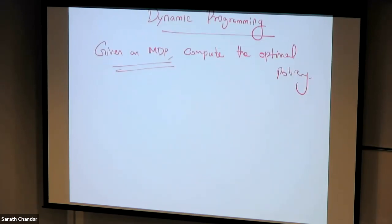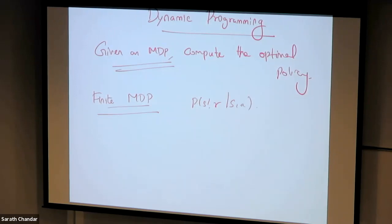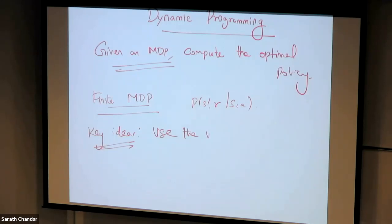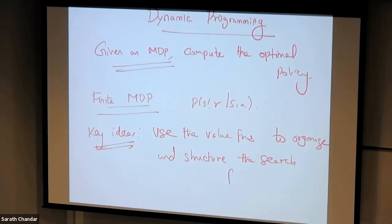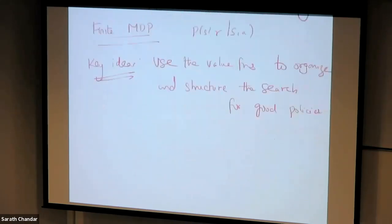We are going to make the finite MDP assumption, which means we have a finite set of states, actions, and rewards, and we have access to P(s', r | s, a). The key idea in dynamic programming is to use value functions to organize and structure the search for good policies. We are going to build on top of the optimality equations, so let's recap the Bellman optimality equations.